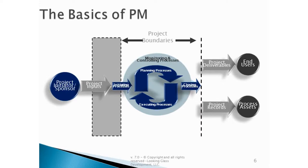Those inputs are brought into the process and you begin that first step, referred to as the initiating process group or initiating processes. Once the project is formally approved to be worked on and managed as a project, you move on to the next step — called the planning process group or planning processes. Those planning processes work in a loop with the executing processes, and those two steps can be done once or many times depending on the methodology your team is using.